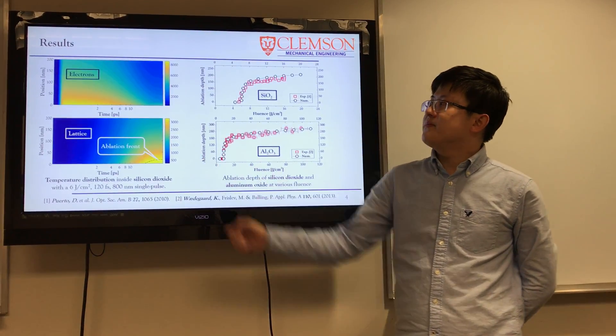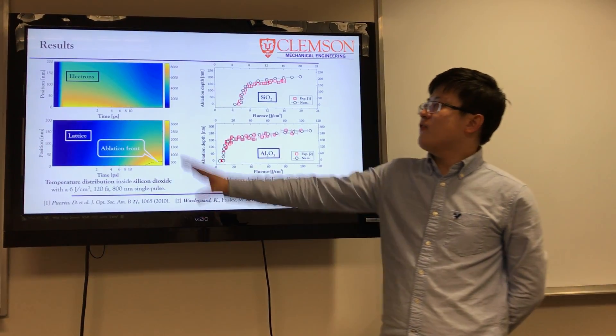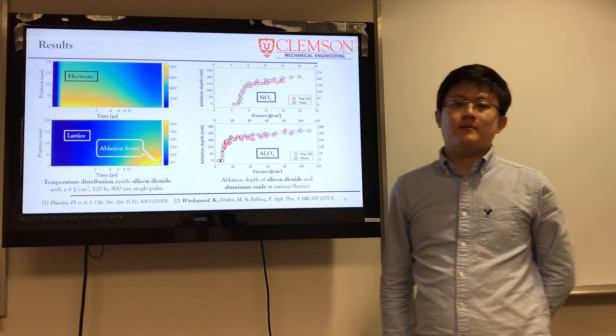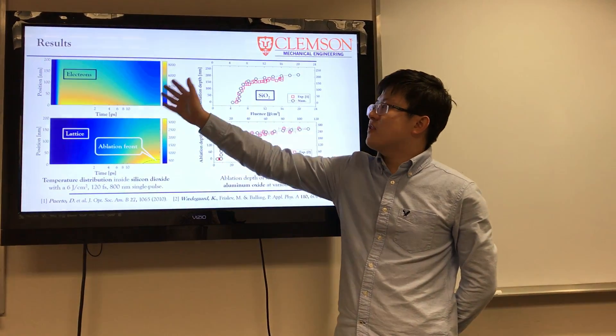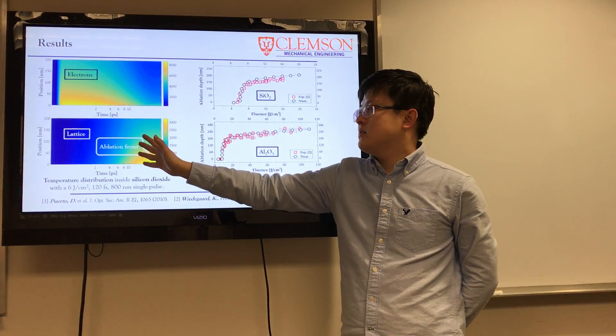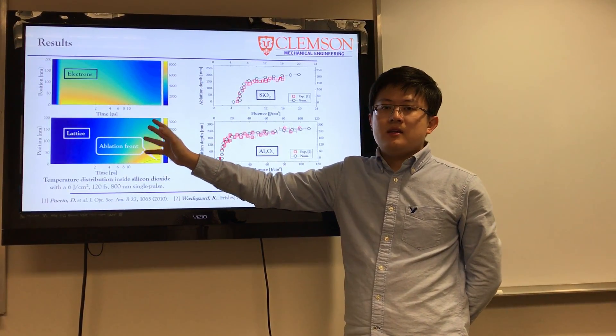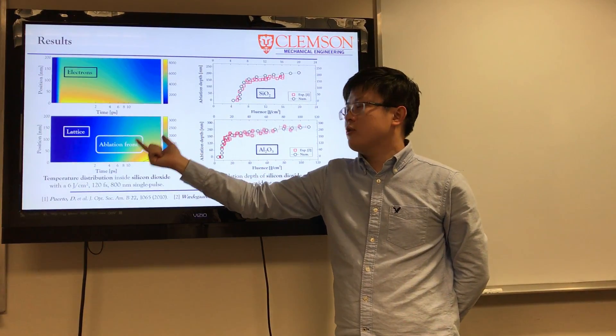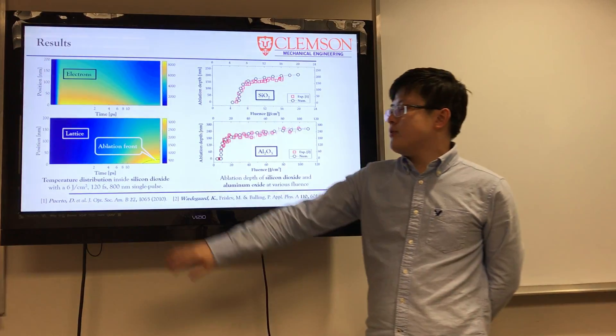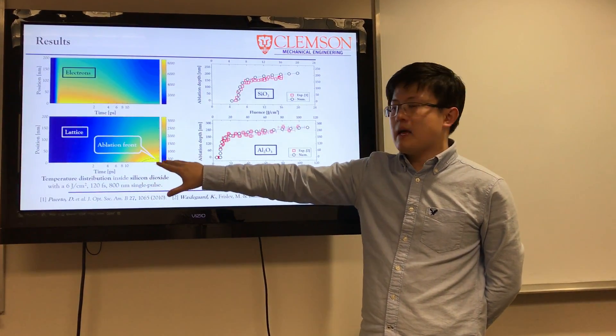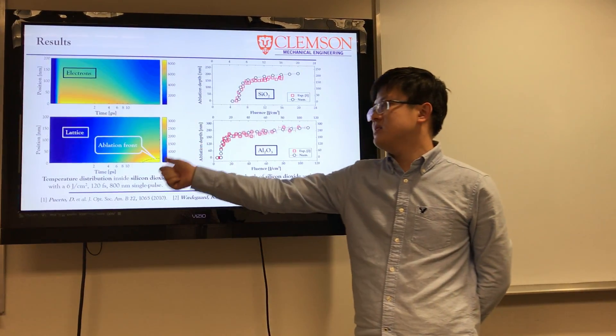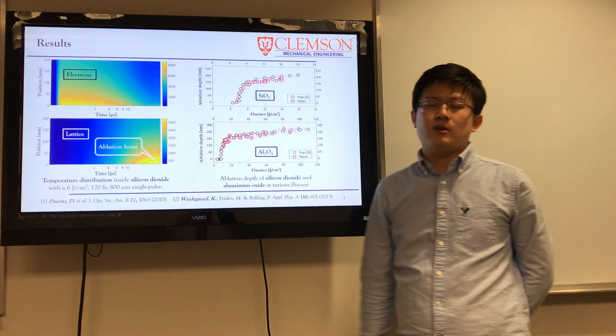Based on the simulation, temperature evolution of electrons and lattice can be investigated in the material. Electrons will first be heated and transfer thermal energy to lattice continuously. Eventually, they will achieve thermal equilibrium within tens of picoseconds. Material is treated to be removed from the sample when the lattice temperature is higher than the ablation criteria, and the ablation depth will be determined eventually.